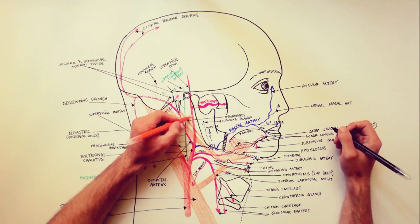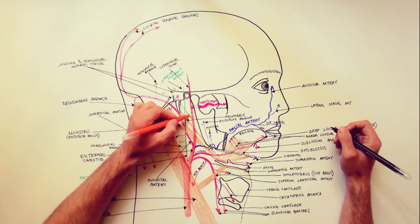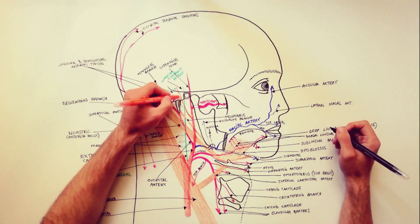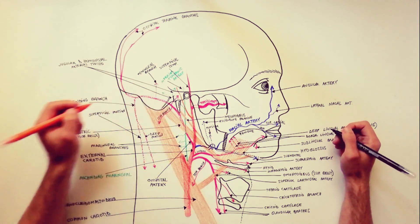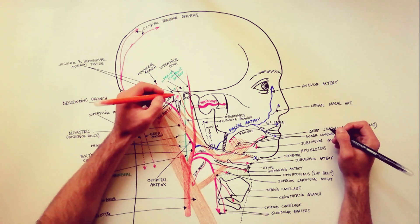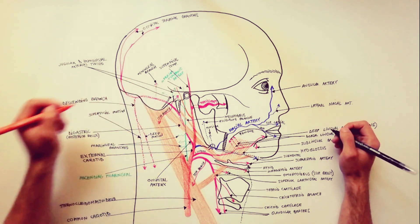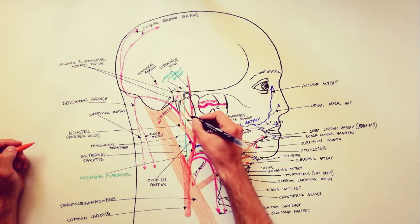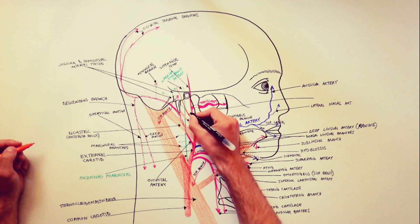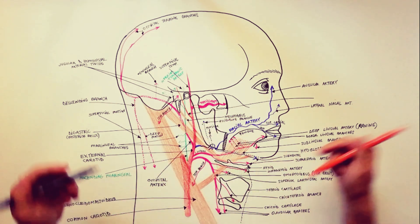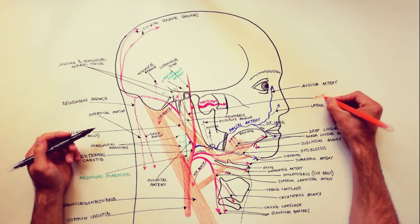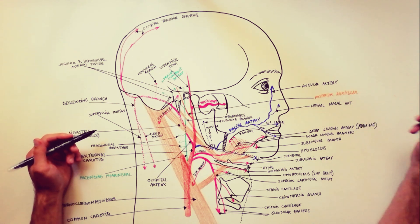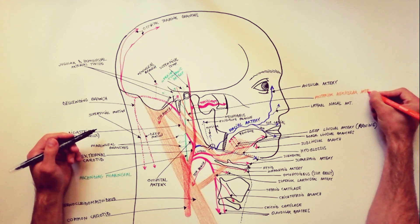Indicated in orange is the last collateral branch of the external carotid artery: the posterior auricular artery. It arises from the external carotid artery outside the carotid triangle, above the digastric and stylohyoid muscles, just opposite the apex of the styloid process. This artery gives off the stylomastoid artery, small branches to the auricle, and supplies blood to the scalp posterior to the auricle.